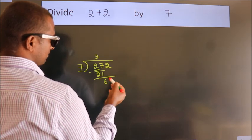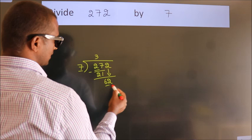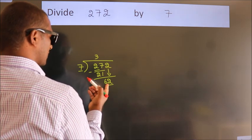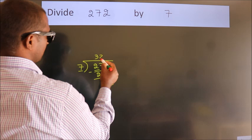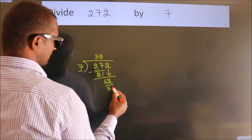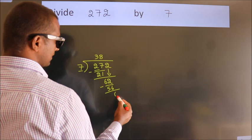After this, bring down the beside number. So 2 down. So 62. A number close to 62 in 7 table is 7 eighths, 56. Now we subtract. We get 6.